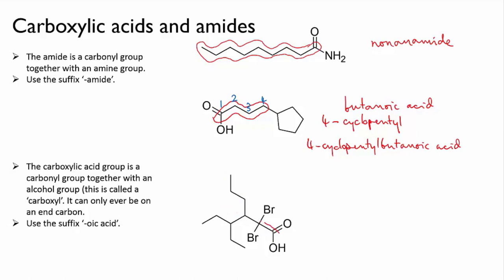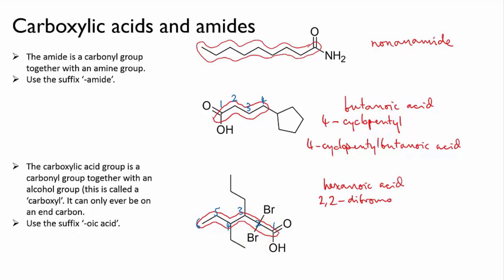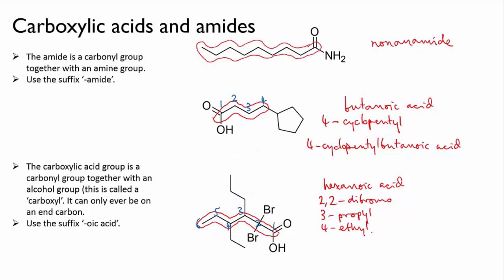Better is to choose one of the other two options, like this. Then we see that the main chain is hexanoic acid, and that it has two bromo substituents on carbon number two, a propyl on carbon number three, and an ethyl on carbon number four. So assembling that alphabetically, we get 2,2-dibromo-4-ethyl-3-propyl-hexanoic acid.